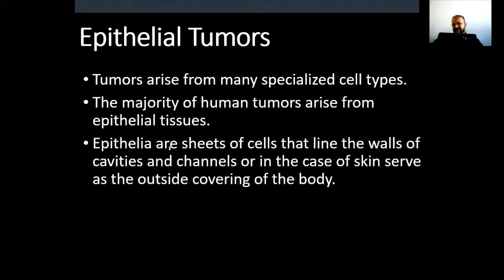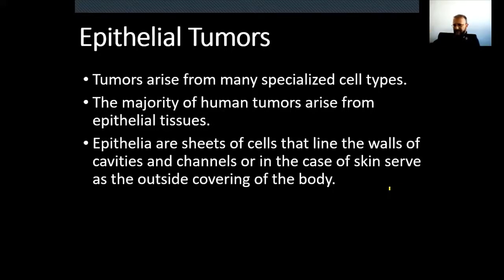Epithelia — epithelial tissues — are the sheets of cells that line the walls of cavities and channels, or in the case of skin, serve as the outside covering of the body. So epithelial cells are lining tissues — sheets that cover body parts. That can be the outer surface of the body in the case of our skin, or organs with cavities. Epithelial tissue covers those cavities — for example, the inner surface of the intestines or the interior surface of the lung.